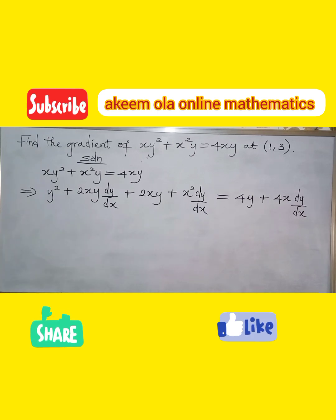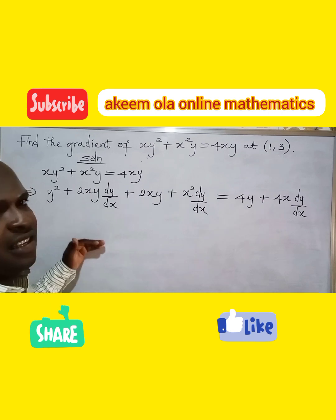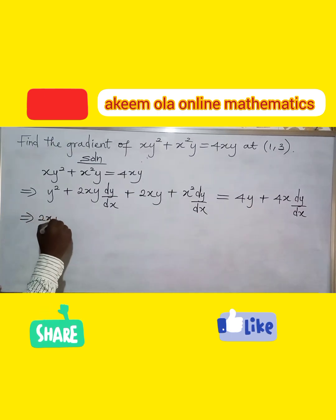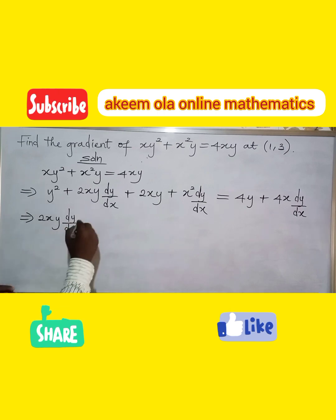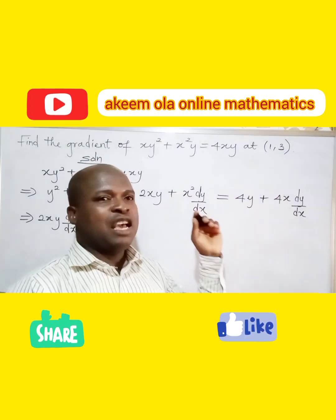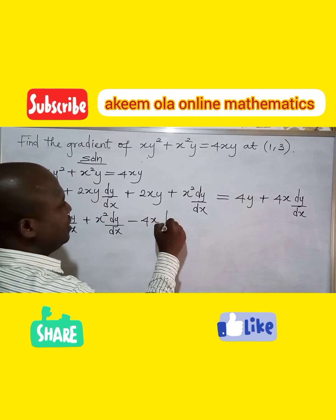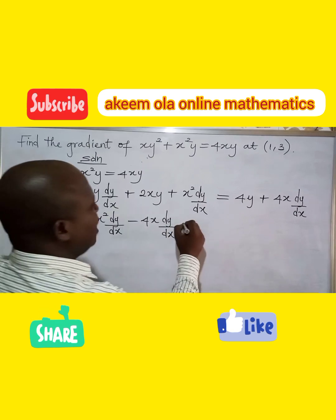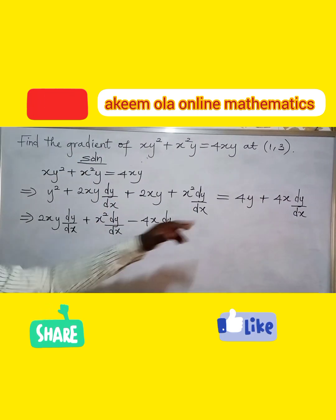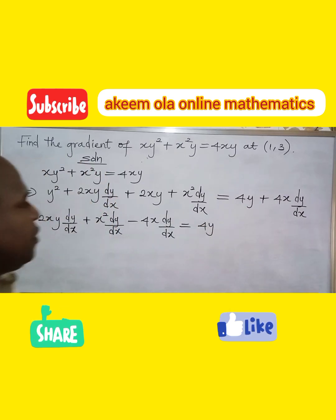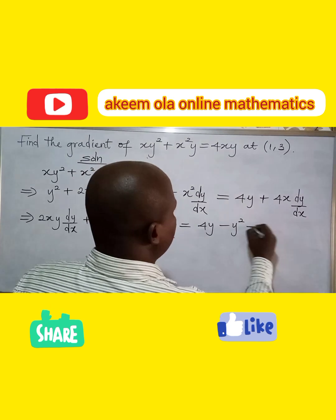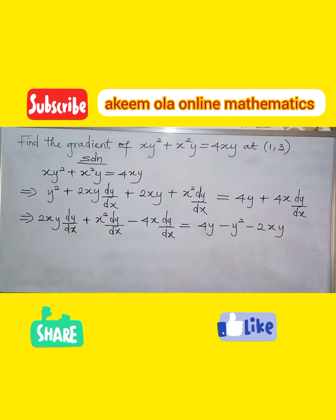Looking at the equation, I want everything with dy/dx on one side and every other term on the other side. So we have 2xy dy/dx plus x squared dy/dx minus 4x dy/dx, and on the other side we have 4y minus y squared minus 2xy.